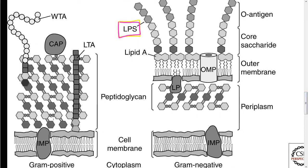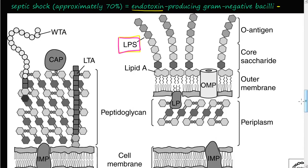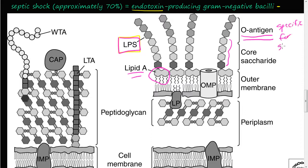Looking at the bacterial structure: on a gram-positive, there's a thicker peptidoglycan layer, while on gram-negative bacteria, the peptidoglycan layer is thinner but there's an outer membrane — an outer shell. The gram-negative has LPS, lipopolysaccharide, which is composed of lipid A — a toxic tail — plus a core saccharide of linked sugars, and at the end, an O-antigen.